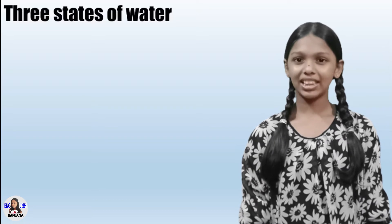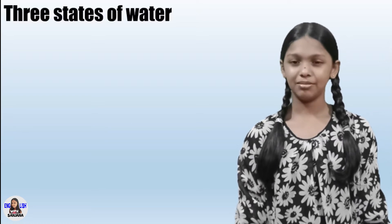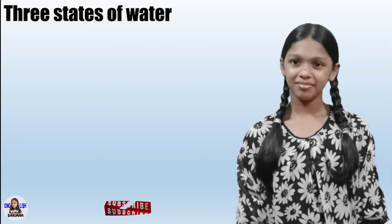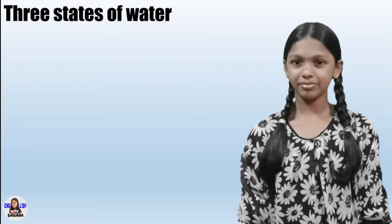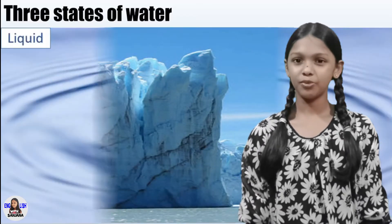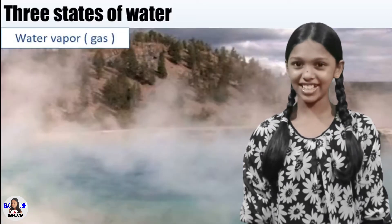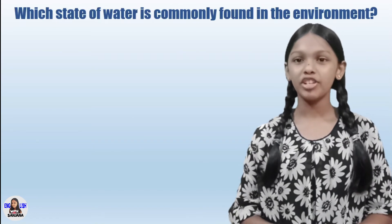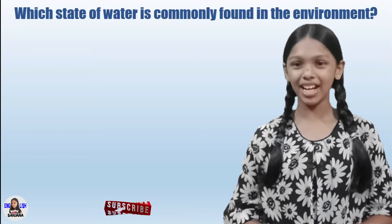We already know there are three states of matter. Water is matter — it has a volume and it occupies space. Let's look at the three states of water: water in solid state, water in liquid state, and water in gaseous state. Out of these three states, which one is the most common state found in the environment? Liquid state.